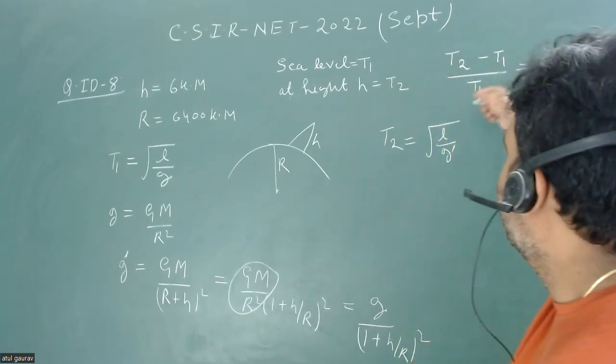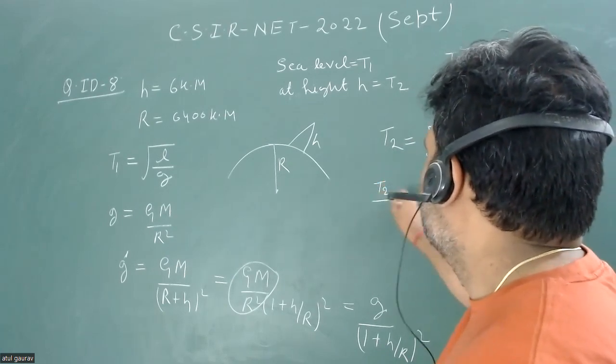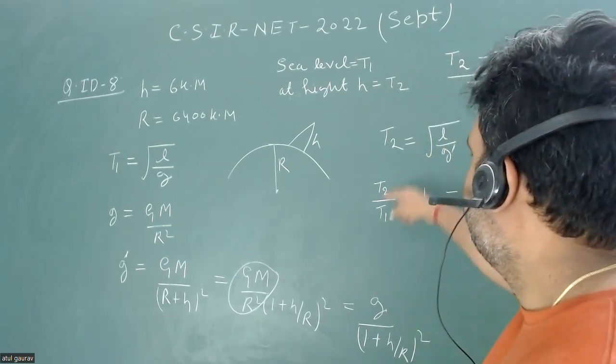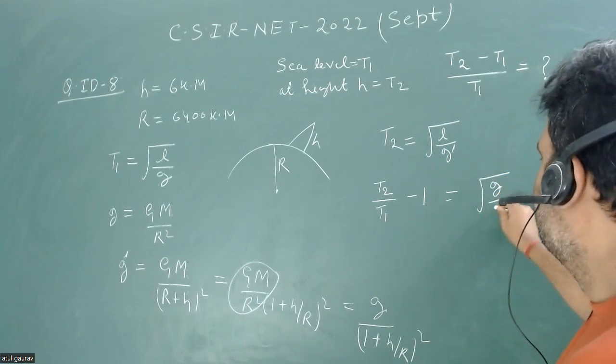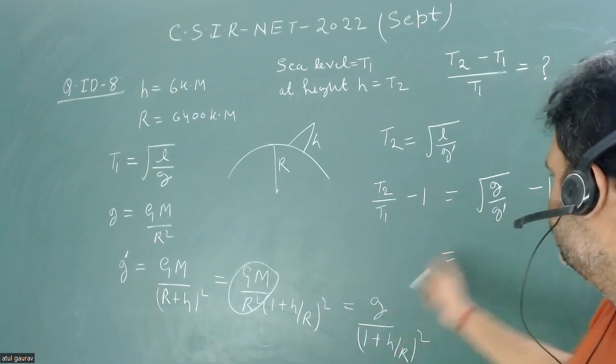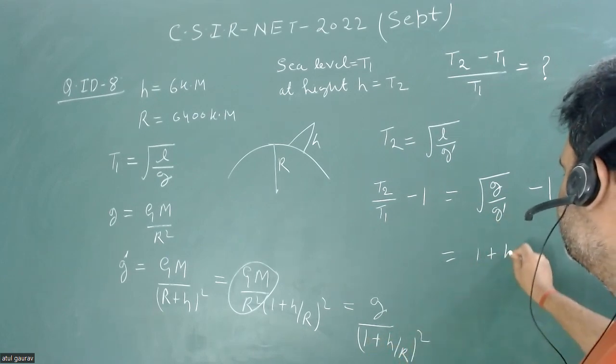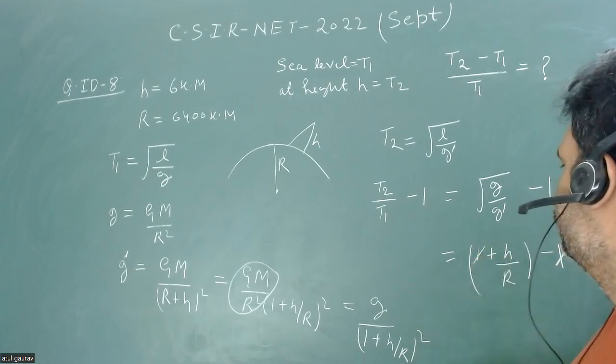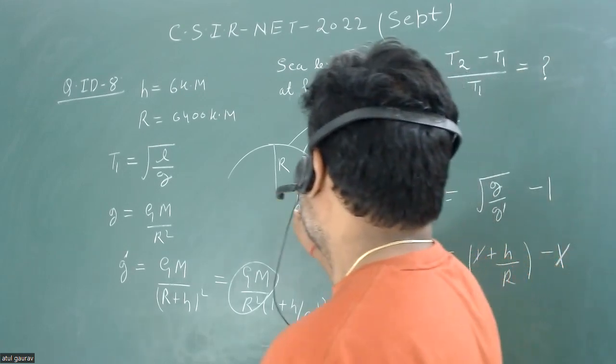When we have to calculate (t2-t1)/t1, that is t2/t1 minus 1. When we write t2 upon t1, we can write root under g upon g dash minus 1. We have to write the value of g dash: 1 plus h upon r square. So this value is 1 plus h by r minus 1, so this cancels out. This term is approximately equal to h upon r.